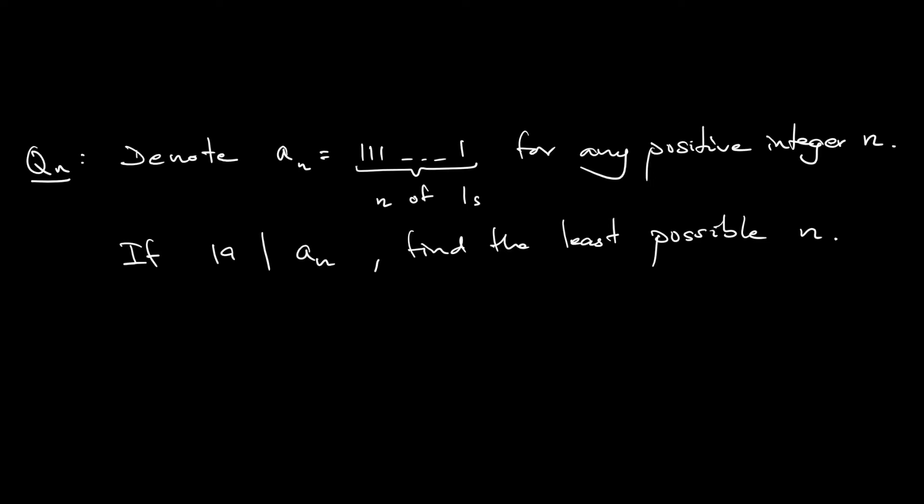If 19 divides a_n, if a_n is divisible by 19, what is the least possible value of n? How to solve this number theory question? Let's try together.